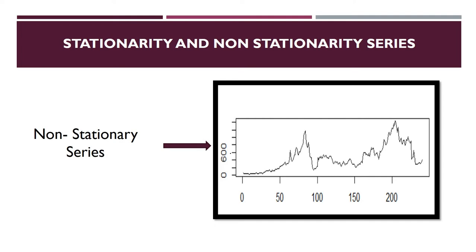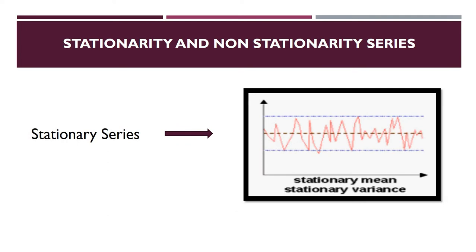Then you have to check whether your data is non-stationary or stationary. Some time series tests are done on non-stationary series and some on stationary series. You must check whether your variables are stationary or non-stationary. For a stationary series, the mean is constant and variance is constant — this is known as weak stationary. In stock price data, however, variance is often not constant throughout.